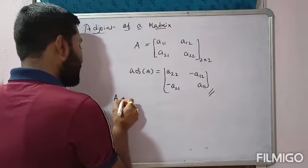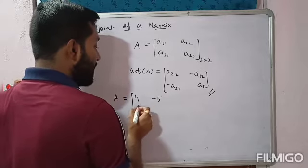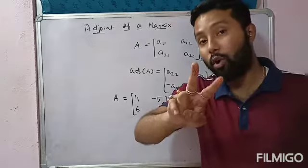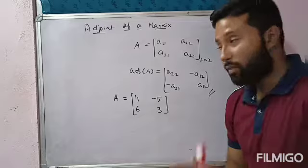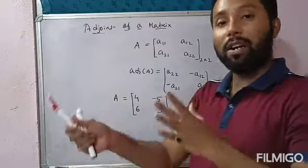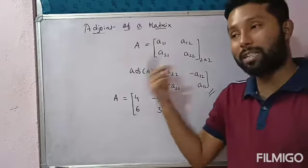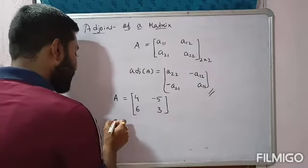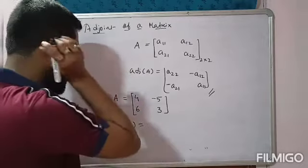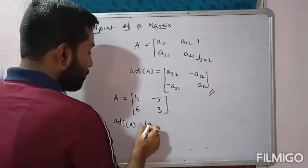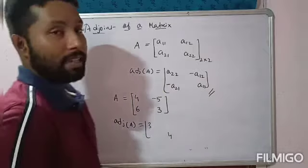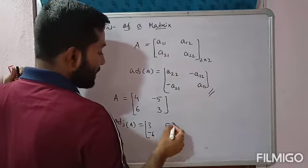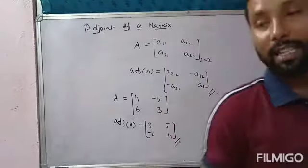Let us take an example. Let A = [4, -5; 6, 3]. Find the adjoint of this matrix. Using the shortcut method: interchange the diagonal elements and change the signs of the non-diagonal elements. So adj(A) = [3, 5; -6, 4]. This is done in one step.